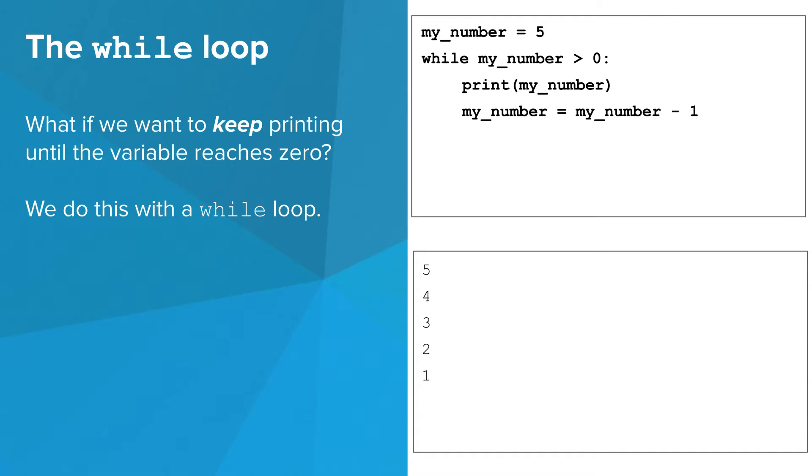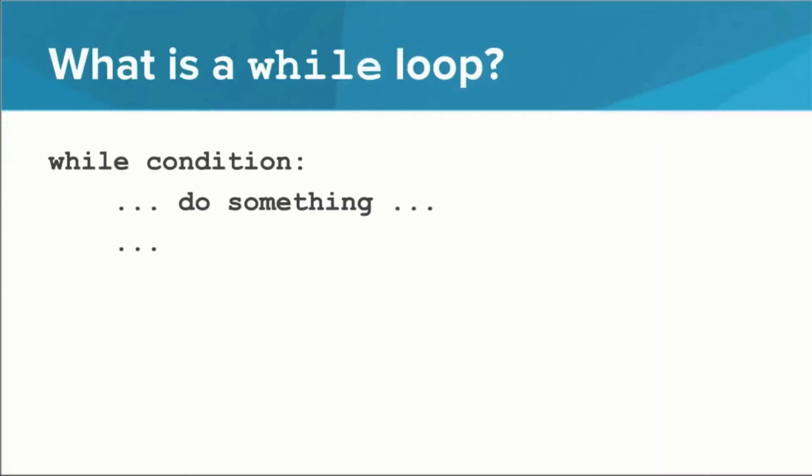A while loop acts like a repeated if statement. When the body of a while loop is executed, the Python interpreter jumps back to the condition to check if the body should be executed again. Here's what a while loop looks like. It looks a lot like an if statement. The only difference is the word while in the place of the word if.